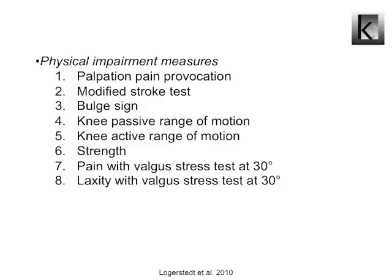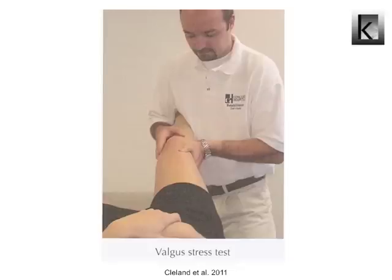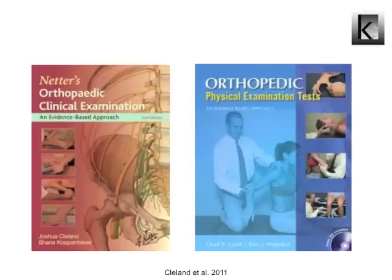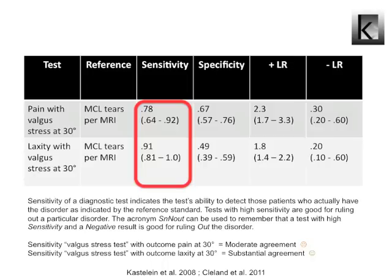Assessing pain and laxity can be done with the valgus stress test at 30 degrees of flexion. This flexion position is necessary to test the MCL and to rule out the posterior medial capsule. A valgus stress is applied to the lateral side of the knee, resulting in opening of the medial joint space. The value of different tests should be interpreted correctly. Practical and clear books are available which help you to apply best practice to get the most clinically significant information from each physical examination.